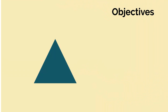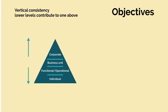Let's call this our organisation. We've got the corporate objectives at the top, we've got the business unit objectives below it, the functional and operational objectives below that, and then it comes down to the individual themselves. When we talk about vertical consistency of objectives, what we mean is the lower levels contribute to the one above.